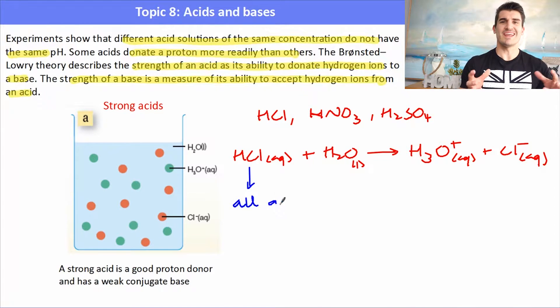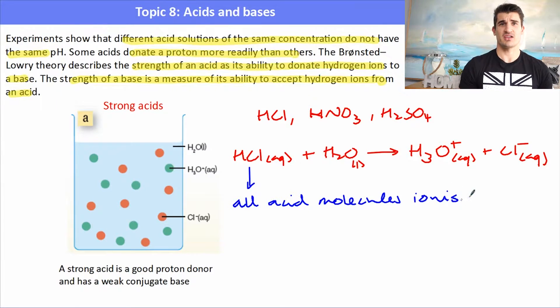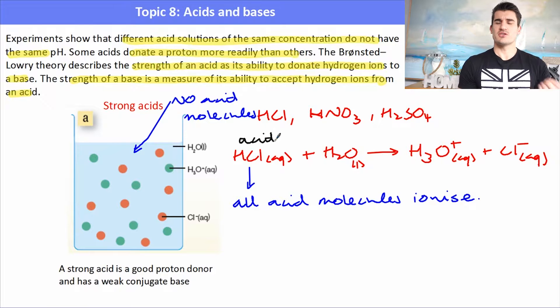That means that in a solution, there would be very few HCl ions. Well, there won't be any HCl ions. All of the HCl will form H3O+. So we would see no acid molecules in the solution. All we see is H3O+ ions and Cl- ions. So HCl is the acid and Cl- is the conjugate base. A strong acid is a very good proton donor and has a very weak conjugate base.